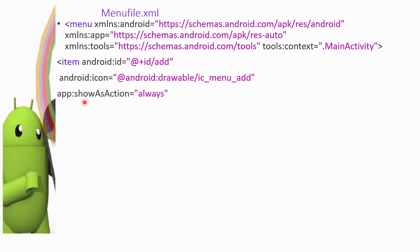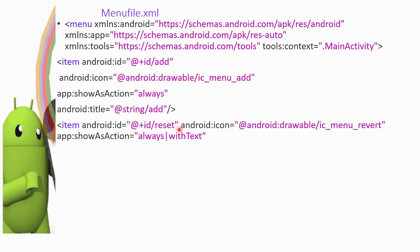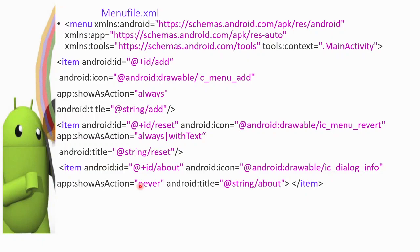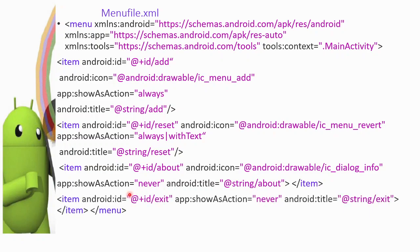The important attribute is app:showAsAction, set to 'always'. Then the title is a string resource set to 'add'. The next item is reset, which has a drawable icon, so showAsAction is set to 'always' with text, and the title is 'reset'. Then there is an item 'about' with showAsAction set to 'never' and title set to the about string. The next item is 'exit' with showAsAction 'never' and title 'exit'.